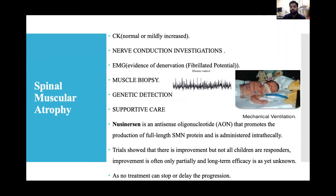Characteristic findings include lack of head support, hypotonia, frog-leg posture, and tongue fasciculations. Others include generalized weakness, severe hypotonia, absent deep tendon reflexes, bulbar muscle palsy, paradoxical respiration, feeding difficulty, and frequent respiratory infections — though IQ is always normal. Investigations: creatine kinase (normal or mildly elevated), nerve conduction studies, EMG, muscle biopsy, and genetic testing. Nusinersen, an antisense oligonucleotide promoting full-length SMN protein production, is administered intrathecally. Trials show improvement but not all children respond, and long-term efficacy remains unknown.